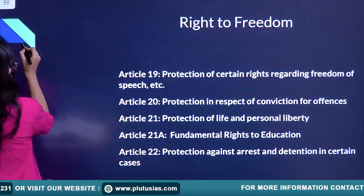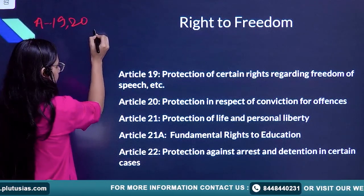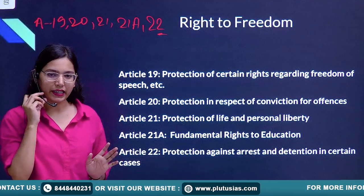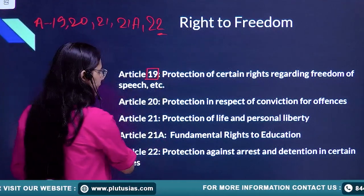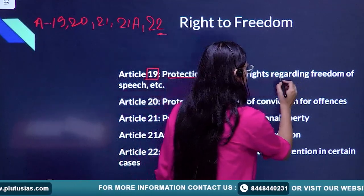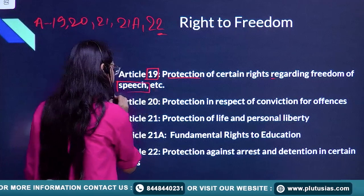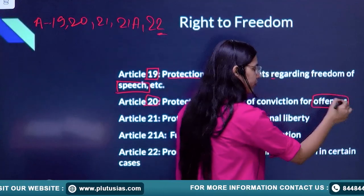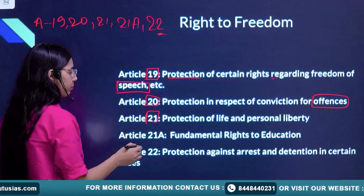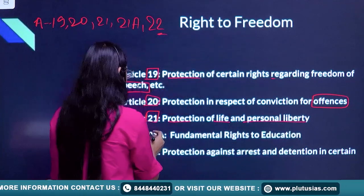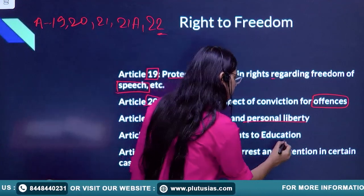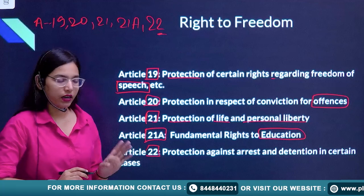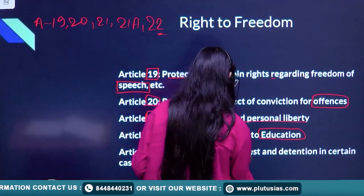After that, you have to remember Articles 19, 20, 21, 21A, and 22. Article 19 resembles protection of certain rights regarding freedom of speech — this keyword 'speech' is important. Article 20 is protection in respect of conviction for offenses. Article 21, very important, is protection of life and personal liberty. Article 21A is the fundamental right to education. Article 22 is protection against arrest and detention in certain cases.